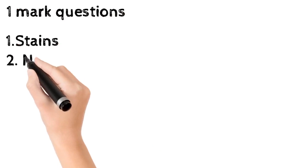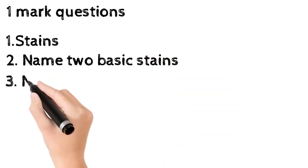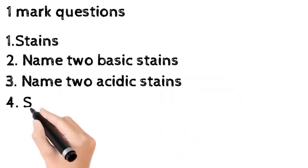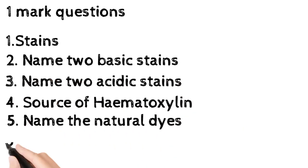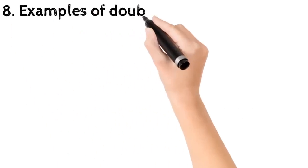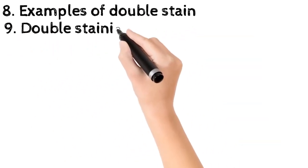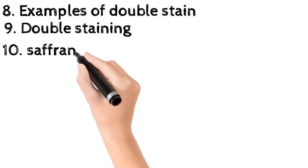One mark questions: 1. Stains, 2. Name two basic stains, 3. Name two acidic stains, 4. Source of hematoxylin, 5. Name the natural dyes, 6. Mordant, 7. Lake, 8. Examples of double stain, 9. Double staining, 10. Safranin.